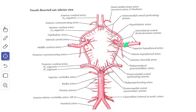The anterolateral group consists of the lateral striate arteries. These arise from the proximal part of the middle cerebral artery and pierce the anterior perforated substance to supply the anterior limb of the internal capsule, the caudate, and the lentiform nuclei. One of the larger lateral striate arteries, most susceptible to rupture, is known as Charcot's artery of cerebral hemorrhage. The posteromedial group arises from the proximal part of the posterior cerebral artery and the adjoining part of the posterior communicating artery.